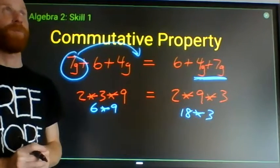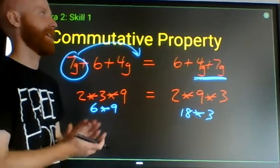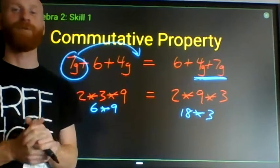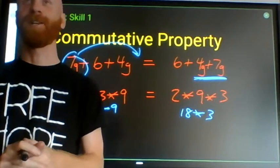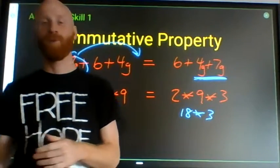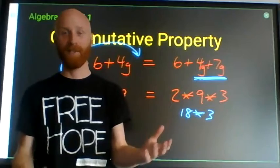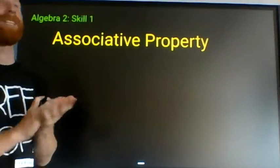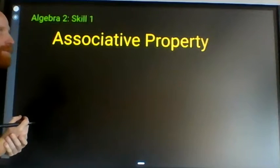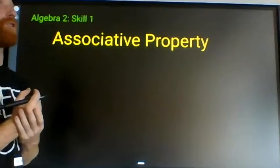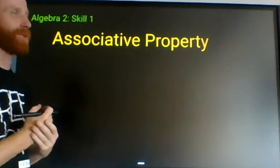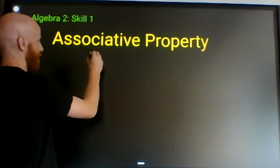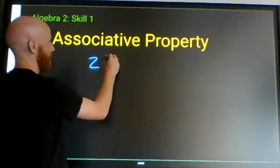The commutative property seems basic, but where you'll run into trouble is if you try to commute items that are not commutable, like division and subtraction. The associative property is also a property that works exclusively with multiplication and addition.